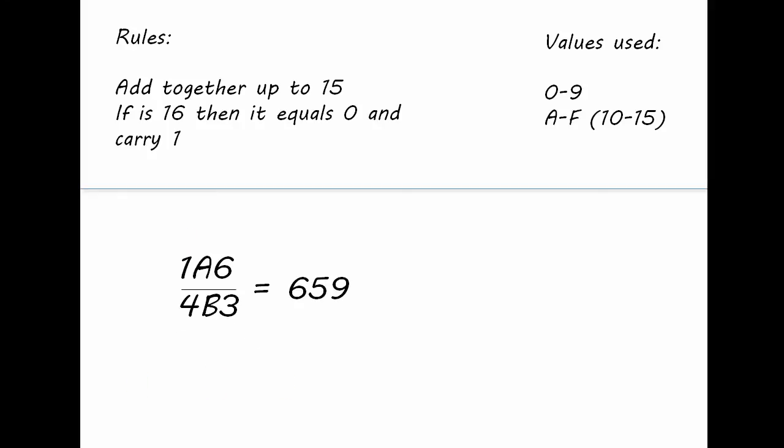For a bit more information, this shouldn't be confused with 659 in decimal. Decimal is in base 10 and hexadecimal is in base 16. 659 in hexadecimal in decimal is 1625.